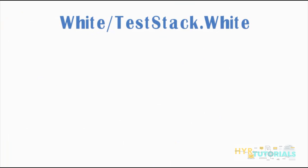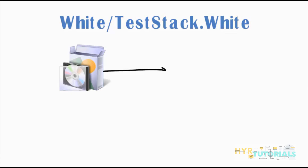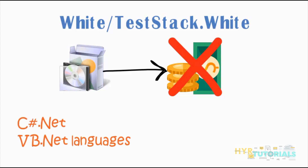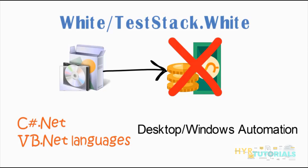The next one is White — TestStack.White. White is an open source library; it is not a licensed version. It is a .NET-based library developed for handling rich client applications, such as Win32, WinForms, Silverlight, WPF, and Java Swing applications. It is designed basically to handle all types of Windows applications. White uses C#.NET and VB.NET languages for writing test scripts, and with White you can perform only Windows automation.